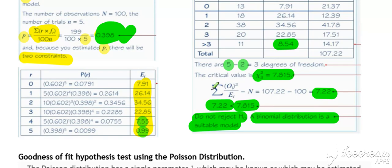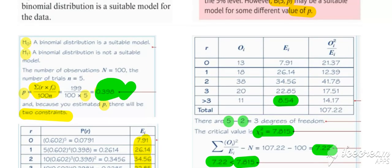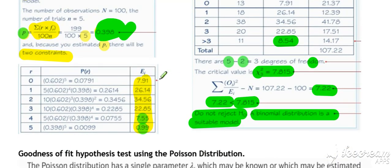Similar example to the previous one, except that we had to estimate p this time, which just changes the degrees of freedom aspect. Obviously, we had to work out slightly different expected values with a different value for p.